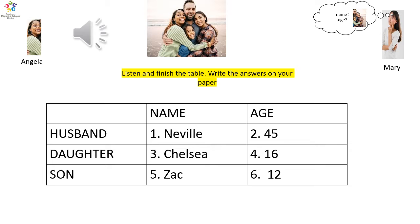How many children do you have? I have two. One daughter and one son. What's your husband's name? My husband's name is Neville. How do you spell Neville? It's N-E-V-I-L-L-E.